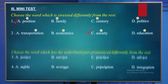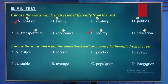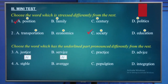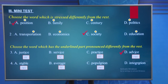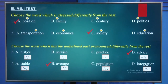Choose the word with the underlined part pronounced differently. Number 3: A. Justice, B. Service, C. Practice, D. Advice - answer is D, pronounced with the /aɪ/ sound while others have the /ɪ/ sound. Number 4: A. Stable, B. Average, C. Population, D. Integration - answer is B, pronounced with /ɪ/ sound while others have the /eɪ/ sound.